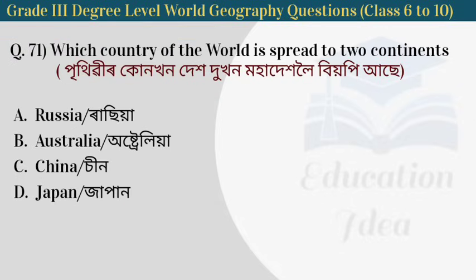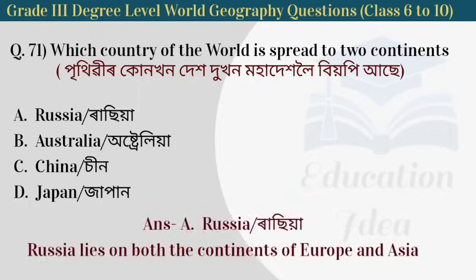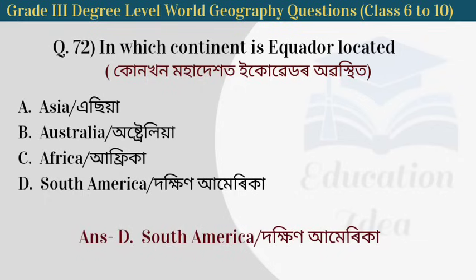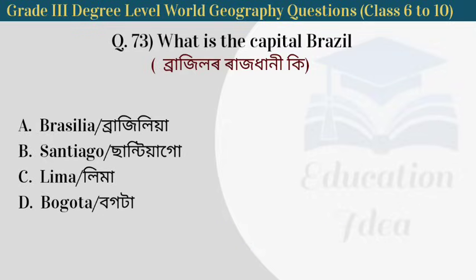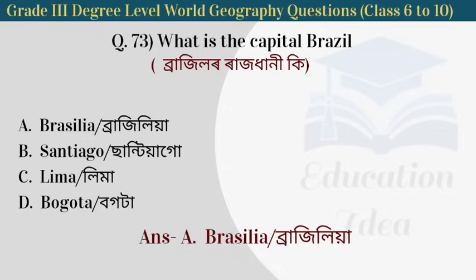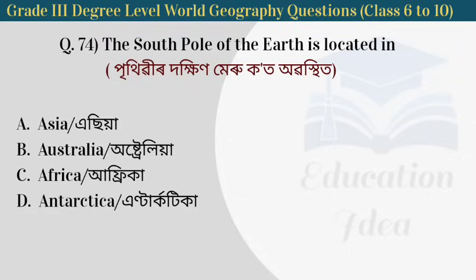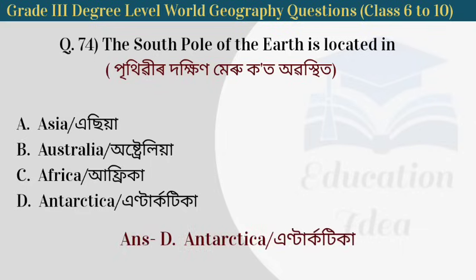Next question: how many continents are there in the world? There are seven continents. Next question: what is the capital of Brazil? The capital of Brazil is Brasília. Next question: where is the South Pole located? The South Pole is located in Antarctica.